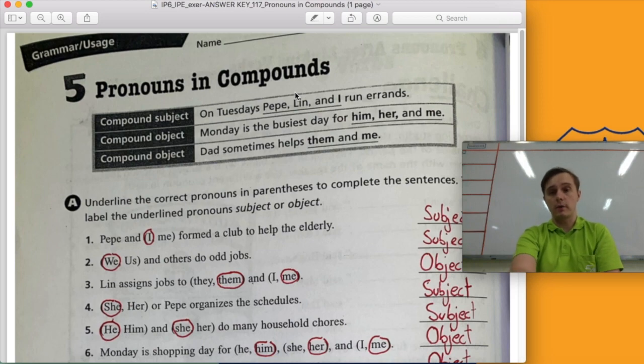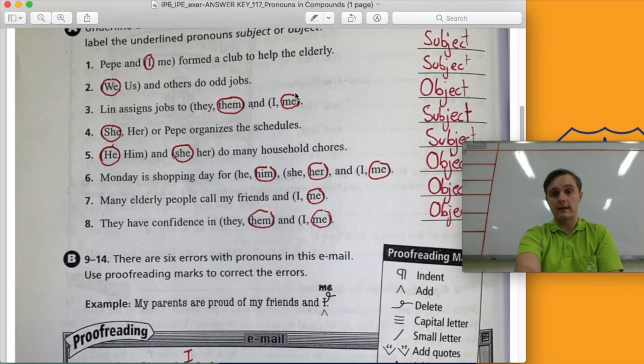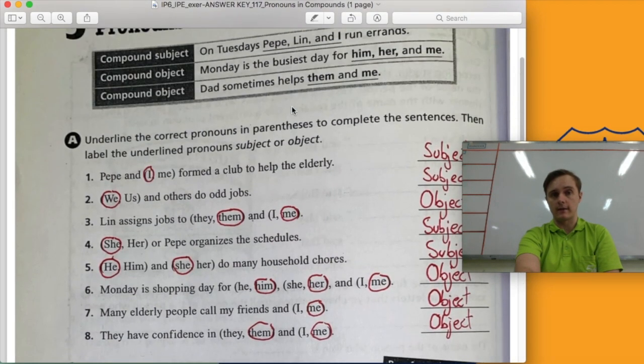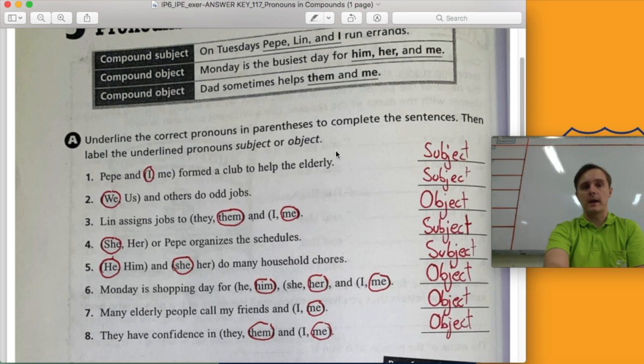First we're going to check that workbook page. So make sure you've got your workbook ready and that you've finished Tuesday's homework. On Tuesday we were discussing pronouns in compounds. And your homework was workbook page 124. For that page, section A, first you needed to decide which pronoun to use and you also needed to tell me if it was a subject pronoun or an object pronoun.